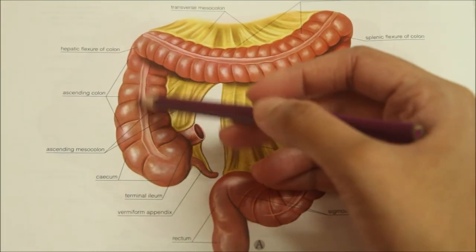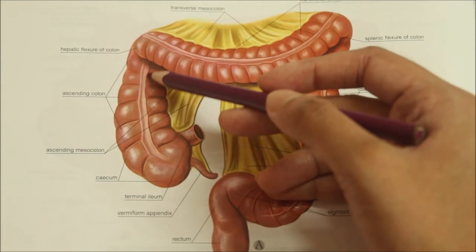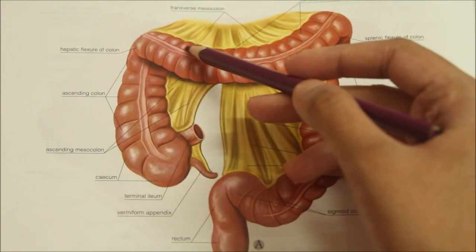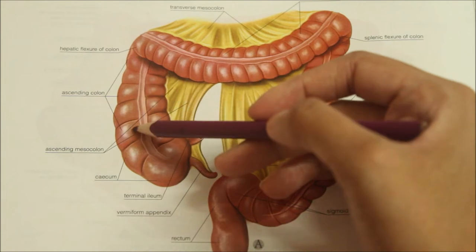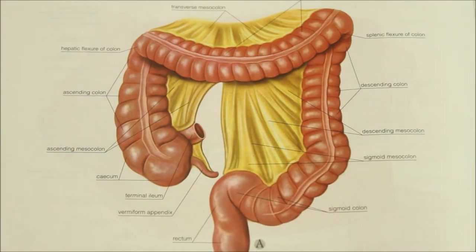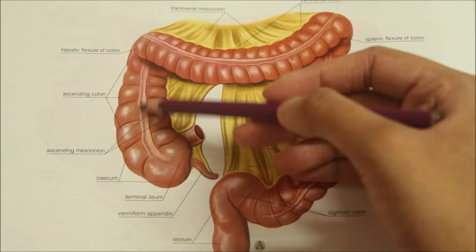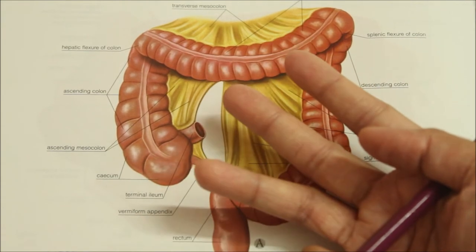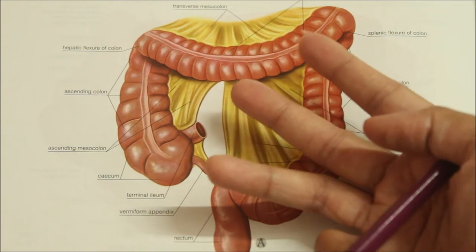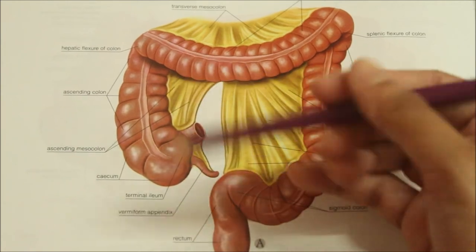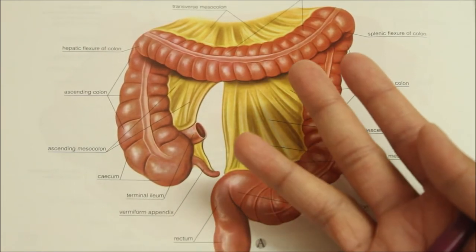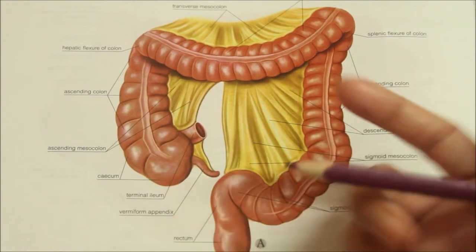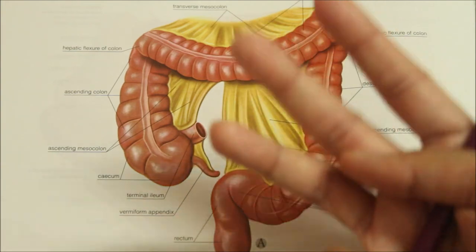Moving on to the next part of the large intestine, we have the ascending colon. It is about 12.5 cm long and extends from the cecum to the inferior surface of the right lobe of the liver, where it bends to the left to form the right colic flexure. It is covered by peritoneum on three sides. Anteriorly, it is related to coils of the small intestine, the right edge of the greater omentum, and the anterior abdominal wall. Posteriorly, it is related to three muscles — the iliacus, quadratus lumborum, and transversus abdominis — three nerves including the lateral cutaneous nerve, ilioinguinal nerve, and iliohypogastric nerves, as well as the right kidney.